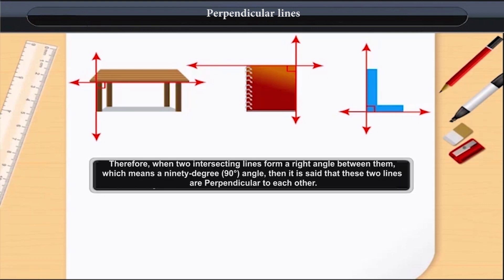Therefore, when two intersecting lines form a right angle between them, which means a 90 degree angle, then it is said that these two lines are perpendicular to each other. This symbol is used to indicate that the lines are perpendicular to each other.